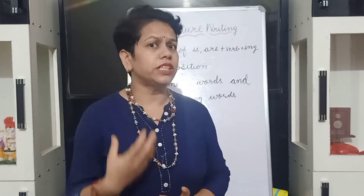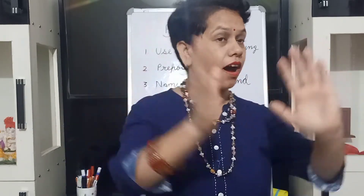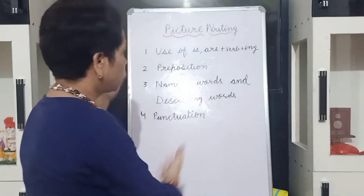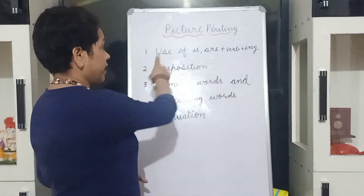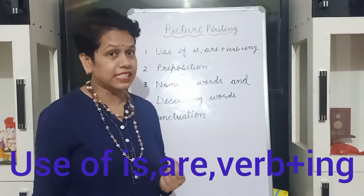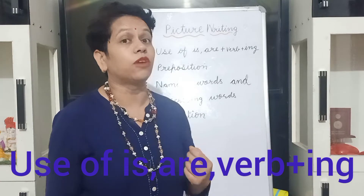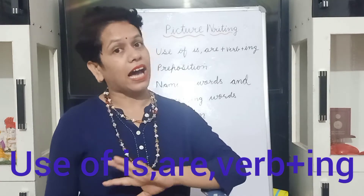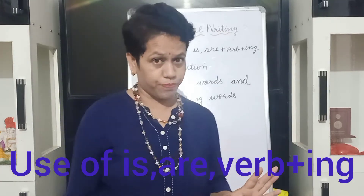For this you need to follow a few rules. Okay children, so here are the rules. Rule number one is use of is, are, and verbs in -ing form.